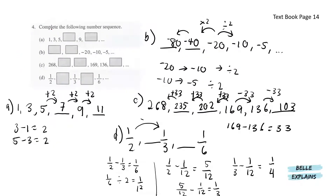Next, for number 4, complete the following number sequence: 1, 3, 5, blank, 9, blank. So 1 to 3, you can see it's plus 2. 3 to 5 is another plus 2. So for the following numbers, you will also have to plus 2 and that will give us 7, 9, 11.